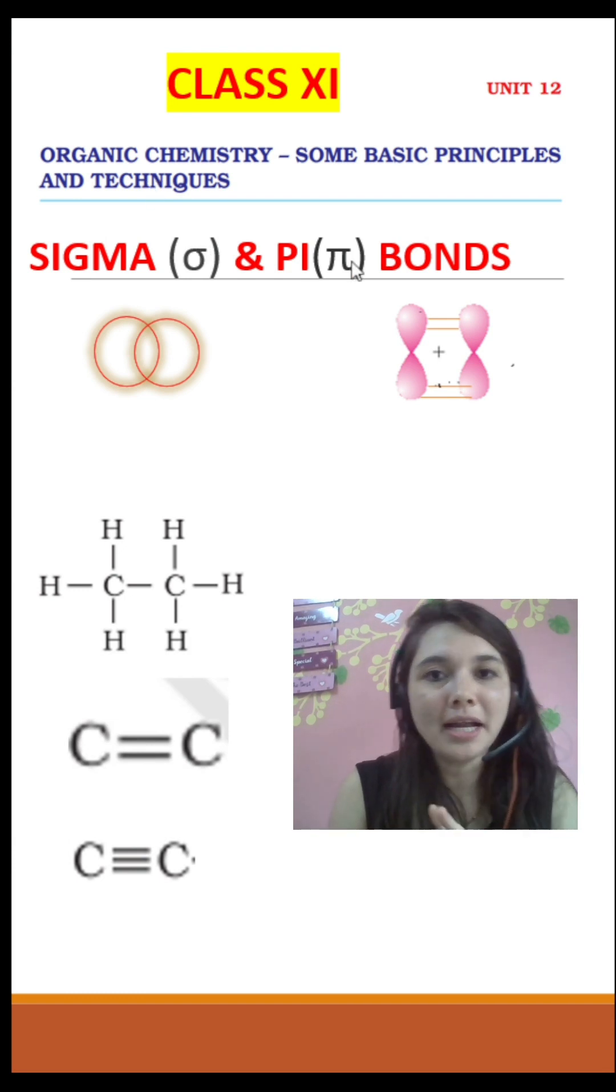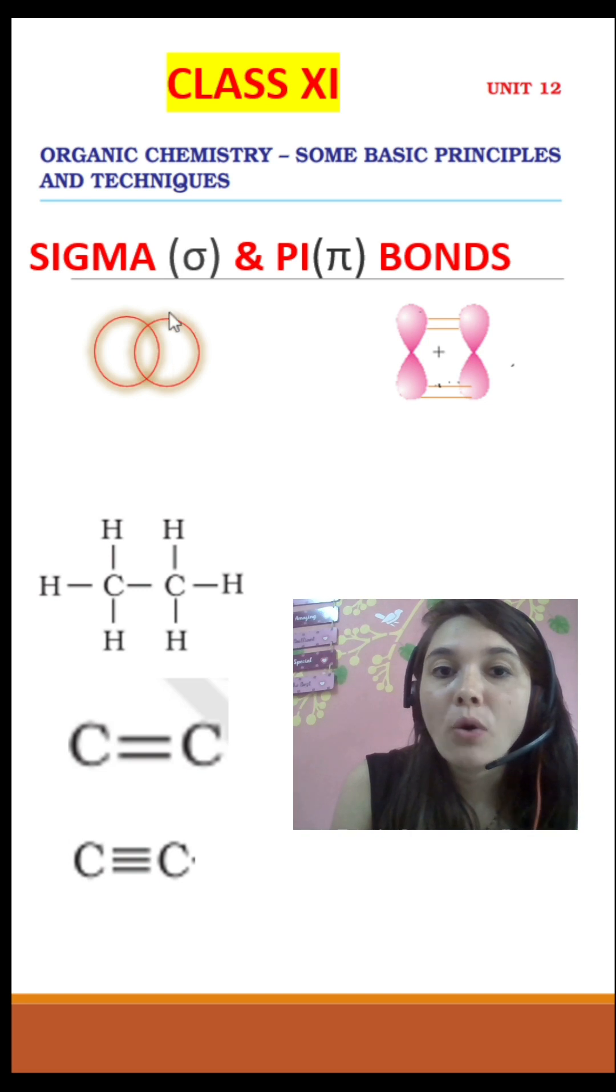Two types they are sigma and pi bonds, bachha. Sigma, when two orbitals overlap axially, therefore sigma bond.